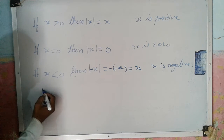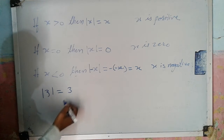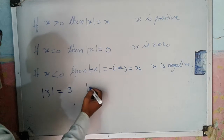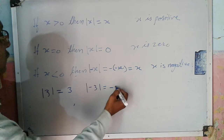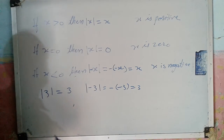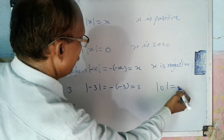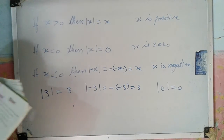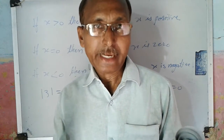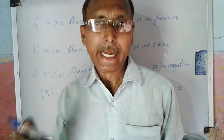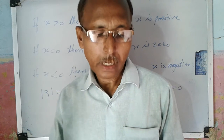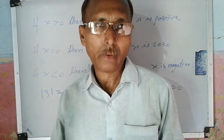For example, the Absolute Value of 3 is equal to 3. Now the Absolute Value of minus 3 is equal to minus of minus 3, which is equal to 3. And the Absolute Value of 0 is equal to 0. That means the Absolute Value of any real number is never negative — it is always positive.